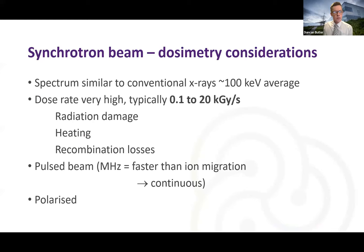So some considerations for dosimetry. We've already seen the spectrum. It's similar to kV x-rays, around 100 kV average. The dose rate is very high, typically between 0.1 and 20,000 gray per second. So that means you get radiation damage. In fact, any detector with too much plastic in it can suffer damage. Some ion chambers only last a year. Also you can heat the chamber up. If you're measuring an ionization chamber repeatedly, it will get hotter and the signal will go down. And the big problem is recombination losses because these are very high dose rate. The beam is pulsed. The electrons are pulsed and so the photons are pulsed as well. However, it's extremely fast, faster than ions migrate inside ion chambers or inside the air. So the beam can be considered continuous. And as I mentioned before, it's polarized.